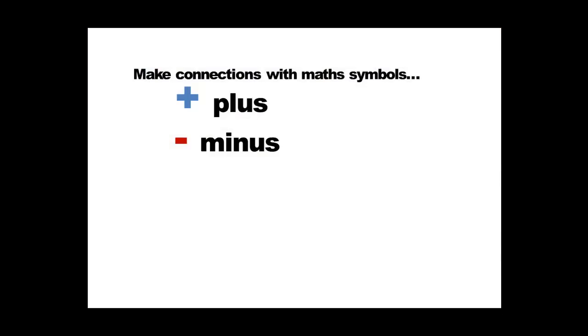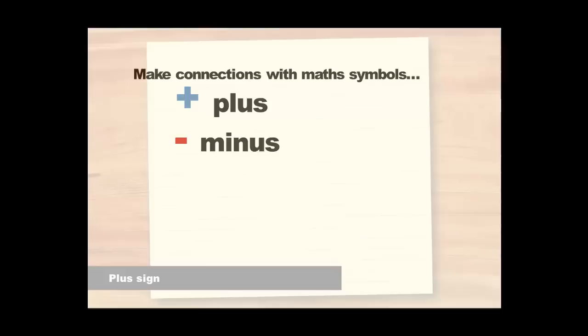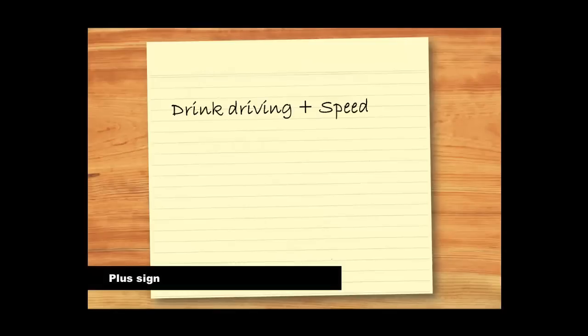You can even map out connections between ideas using the plus and minus symbols. For example, high risk behaviors such as drink driving and speeding are major factors in serious crashes involving young males aged 18 to 25. Here I've noted this down quickly as, drink driving plus speed equals crashes 18 to 25.